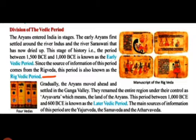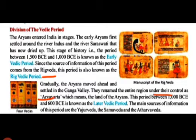Gradually, the Aryans moved ahead and settled in the Ganga Valley. They renamed the entire region under their control as Arya Varta, which means the land of Aryans. This period between 1000 BC and 600 BC is known as the Latter Vedic Period.